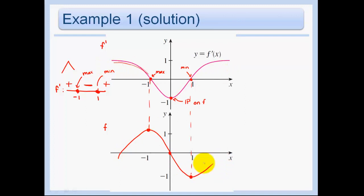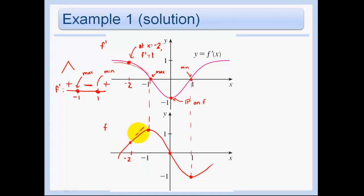Here is the derivative — you're just drawing the derivative. At x equals negative 2, we see f prime equals 1. So at x equals negative 2, f prime equals 1. That means if we go down to our function, at x equals negative 2, the slope of our tangent line should be 1. That is how you get a really good idea of what the function looks like and how the rates change over time.